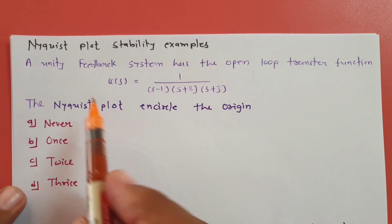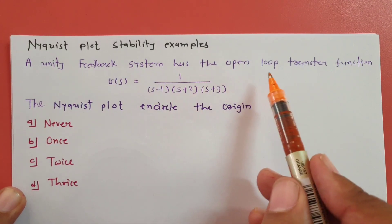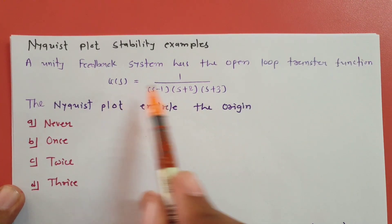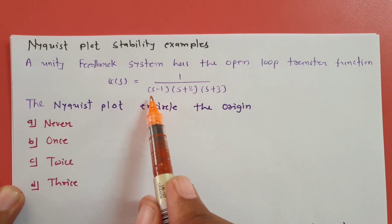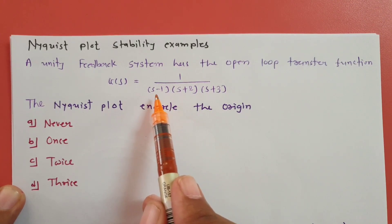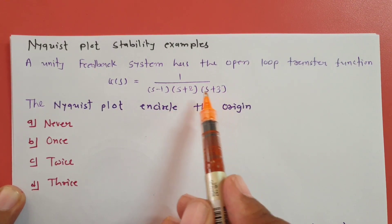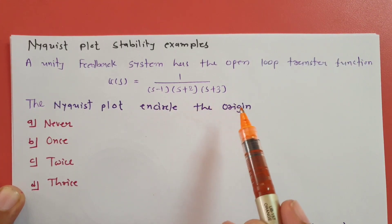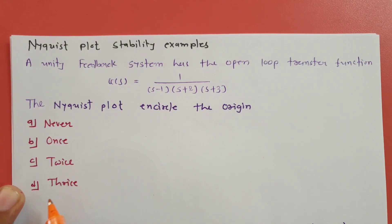In the first question, a unity feedback system has open loop transfer function G(s) = 1 / [(s−1)(s+2)(s+3)]. The question asks: the Nyquist plot encircles the origin how many times — never, once, twice, or thrice?